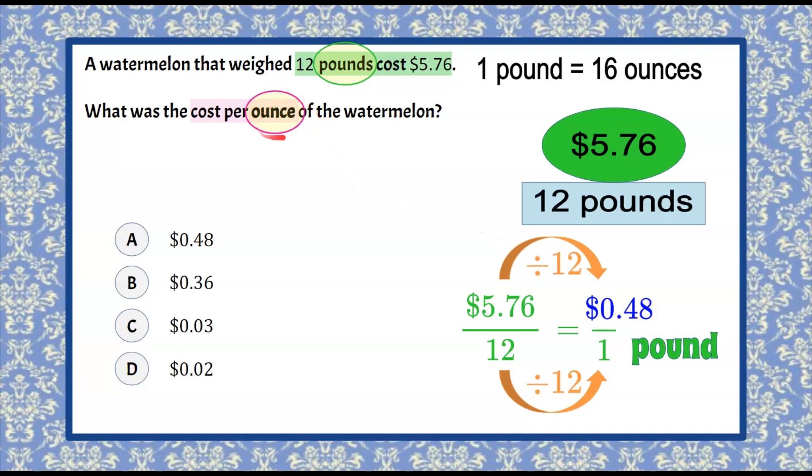Now we want to convert this to ounces, but I want to point out that if you thought you were done at 48 cents per pound, which is not what we're asked, we're asked cost per ounce, not cost per pound, they've tricked you and put answer choice A here. That is how much it was per pound, not per ounce. So we're going to eliminate that one right away.